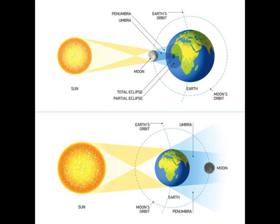Lunar eclipses are more common — they only need the Moon to pass through Earth's shadow — and they last longer because Earth's umbra is much larger than the Moon. Solar eclipses are much more remarkable because they are only possible in the particular way we see them — where the Moon covers the Sun exactly, leaving the corona visible — because the Sun and the Moon have the same angular size, which is just an amazing coincidence.